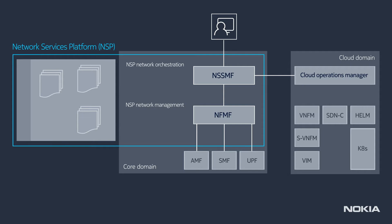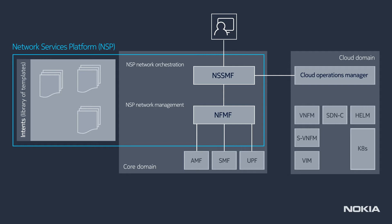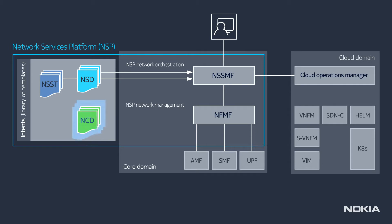To automate the allocation of the core network slices, NSP uses deployment templates. There are three types of templates: the Network Slice Subnet Template, which describes what core network slice to create and what network functions are needed; the Network Service Descriptor, which describes what network functions to instantiate, connect, update, and terminate; and the Network Configuration Descriptor, which describes what network functions to configure. The templates are created once by the domain experts and can be reused many times by the network operators.